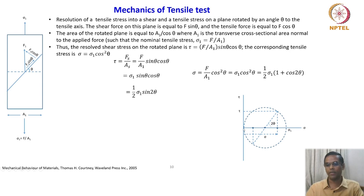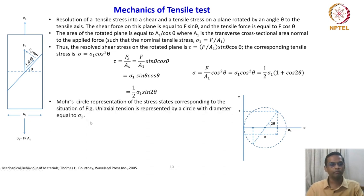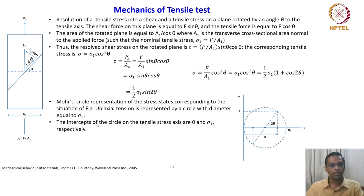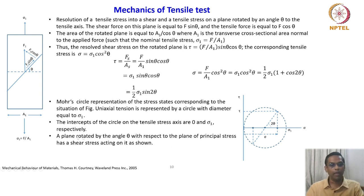In a tensile test, the only principal stress is σ₁, which forms the diameter of a Mohr circle. A Mohr circle representation of the stress state: uniaxial tension is represented by a circle with diameter equal to σ₁. The intercepts of the circle on the tensile stress axis are 0 and σ₁. A plane rotated by angle θ with respect to the plane of principal stress has a corresponding shear stress shown; in the Mohr circle, this is plotted as 2θ, giving the corresponding tensile stress and shear stress.